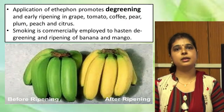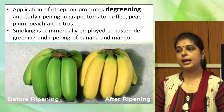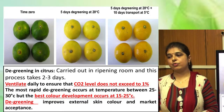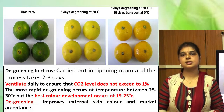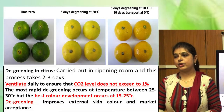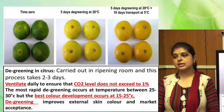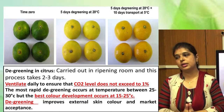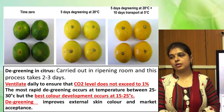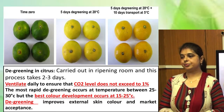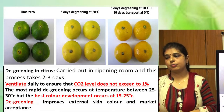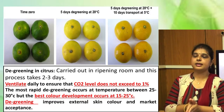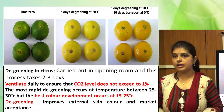Application of ethylene also promotes degreening — the degradation of green chlorophyll pigment to anthocyanin. Degreening in citrus is mainly performed at 15 to 25 degrees Celsius, as the best color development occurs at this temperature. The ripening process is carried out in a ripening room and takes approximately two to three days to complete. CO2 level should not exceed one percent. Degreening is recommended in citrus because it improves skin color which is accepted by the market.